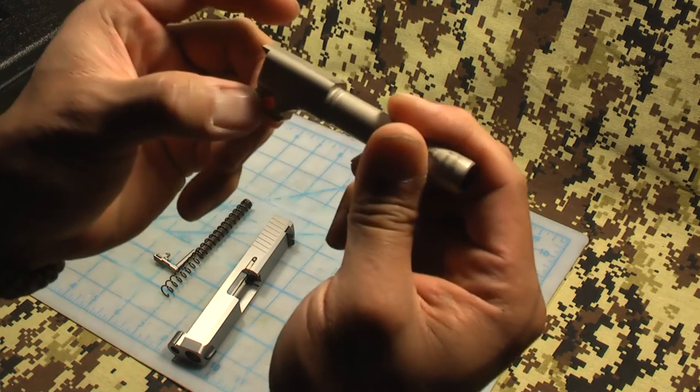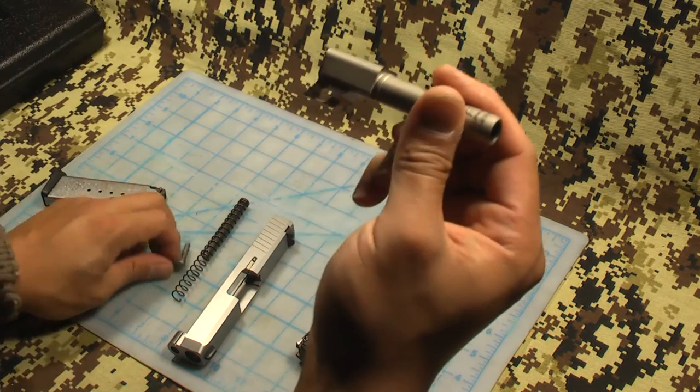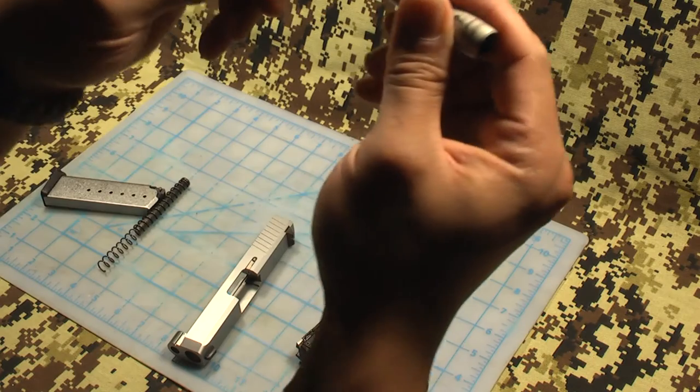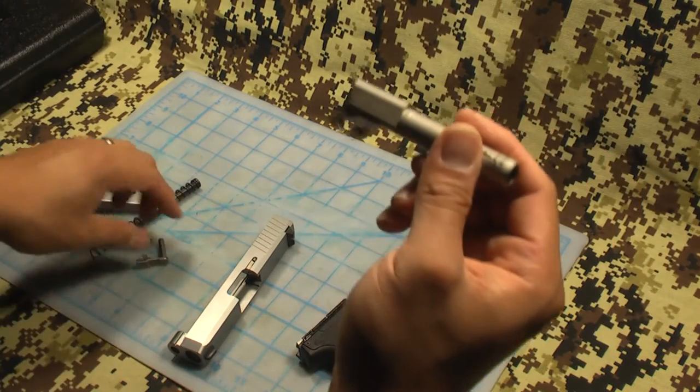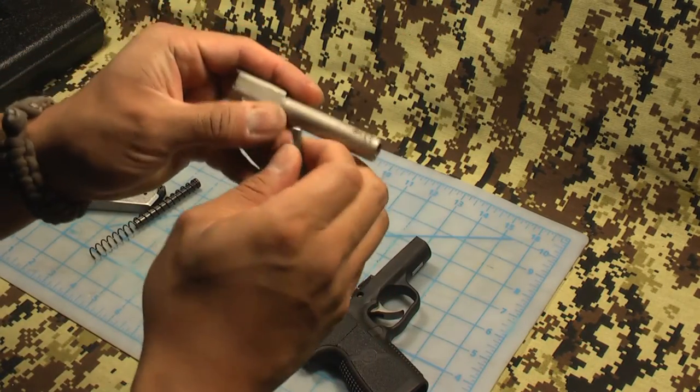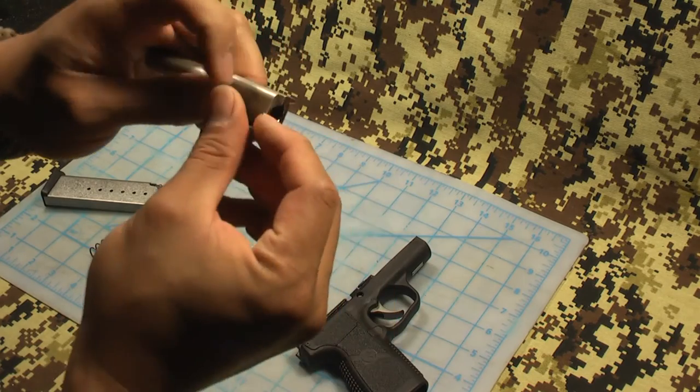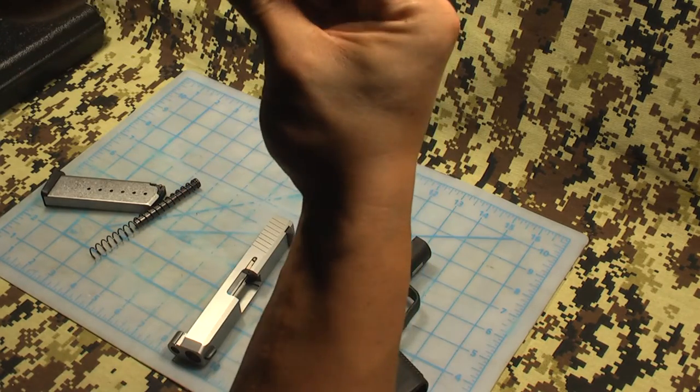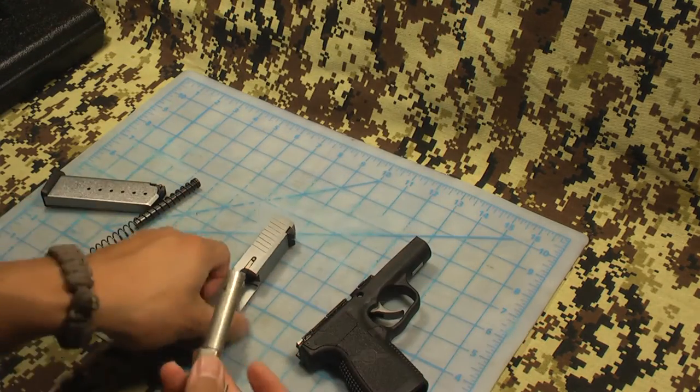So it captures the barrel with this pin when it's inside the firearm, and it kind of moves in this position as it's being fired. Okay, let's put it back together.